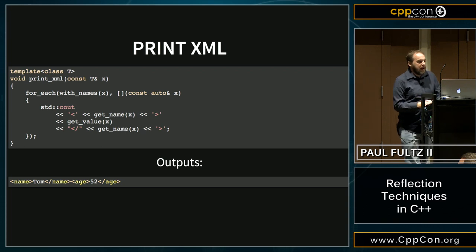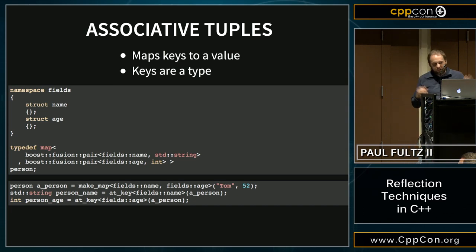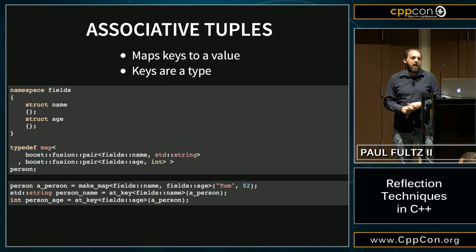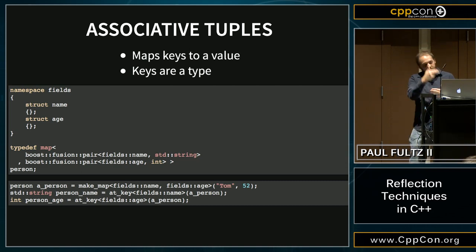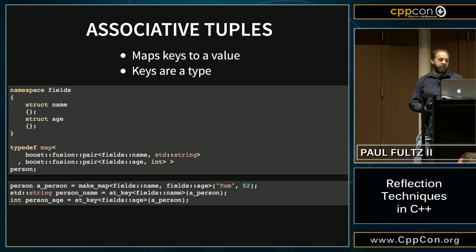If we run printXML with the person class, we get an output like shown at the bottom. Going even further with Boost Fusion's capabilities, Boost Fusion has the idea of associative sequences — essentially like associative tuples, somewhat like std::map, but rather than keys being values, the keys are types. So by giving it a type, you can look up the corresponding value. We build fields using types like 'name' and 'age' as different structs, build the map using fusion::pair, and then access fields using at_key<fields::name> instead of at_c<0>.